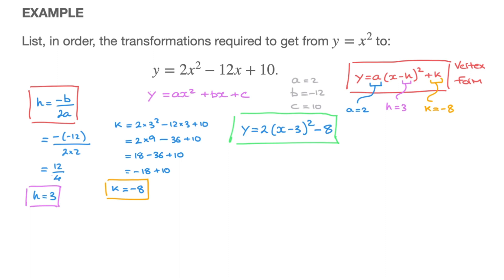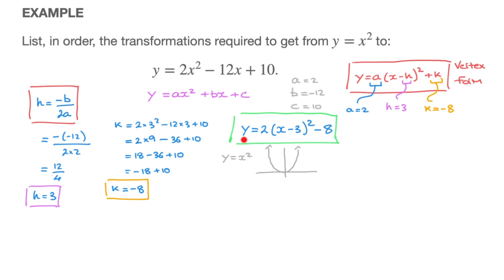Now that we've done this, we're able to list all of the transformations required to get from y equals x squared to this parabola. When a parabola is written in its vertex form, the order in which we carry out the transformations can be listed in the order in which we come across them as we read the equation from left to right. Our starting point is y equals x squared — the parent function — which looks like a typical parabola.